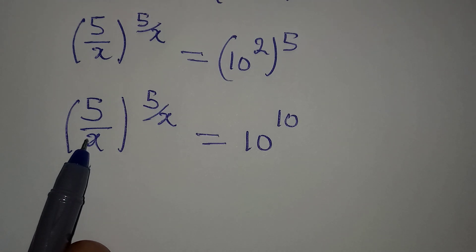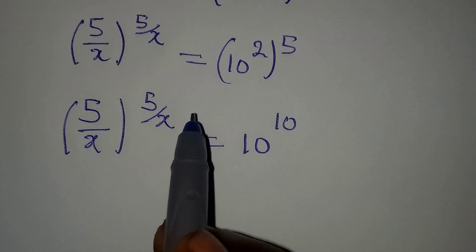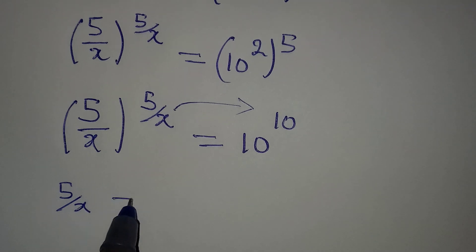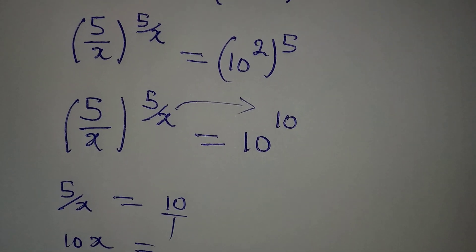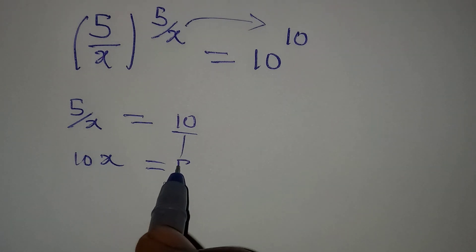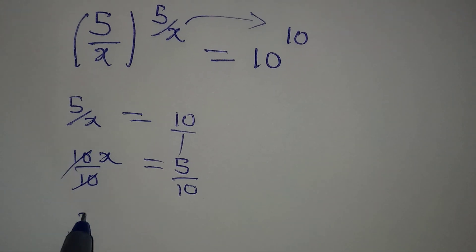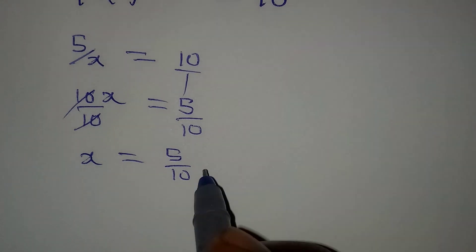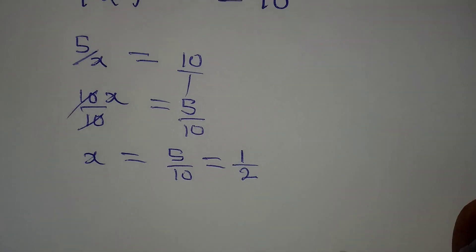Now we can compare, since we have the same number and the same power on both sides. Comparing the powers first: 5 over x equals 10. Cross-multiplying gives 10x = 5, so dividing both sides by 10 gives x = 5/10, which simplifies to x = 1/2.